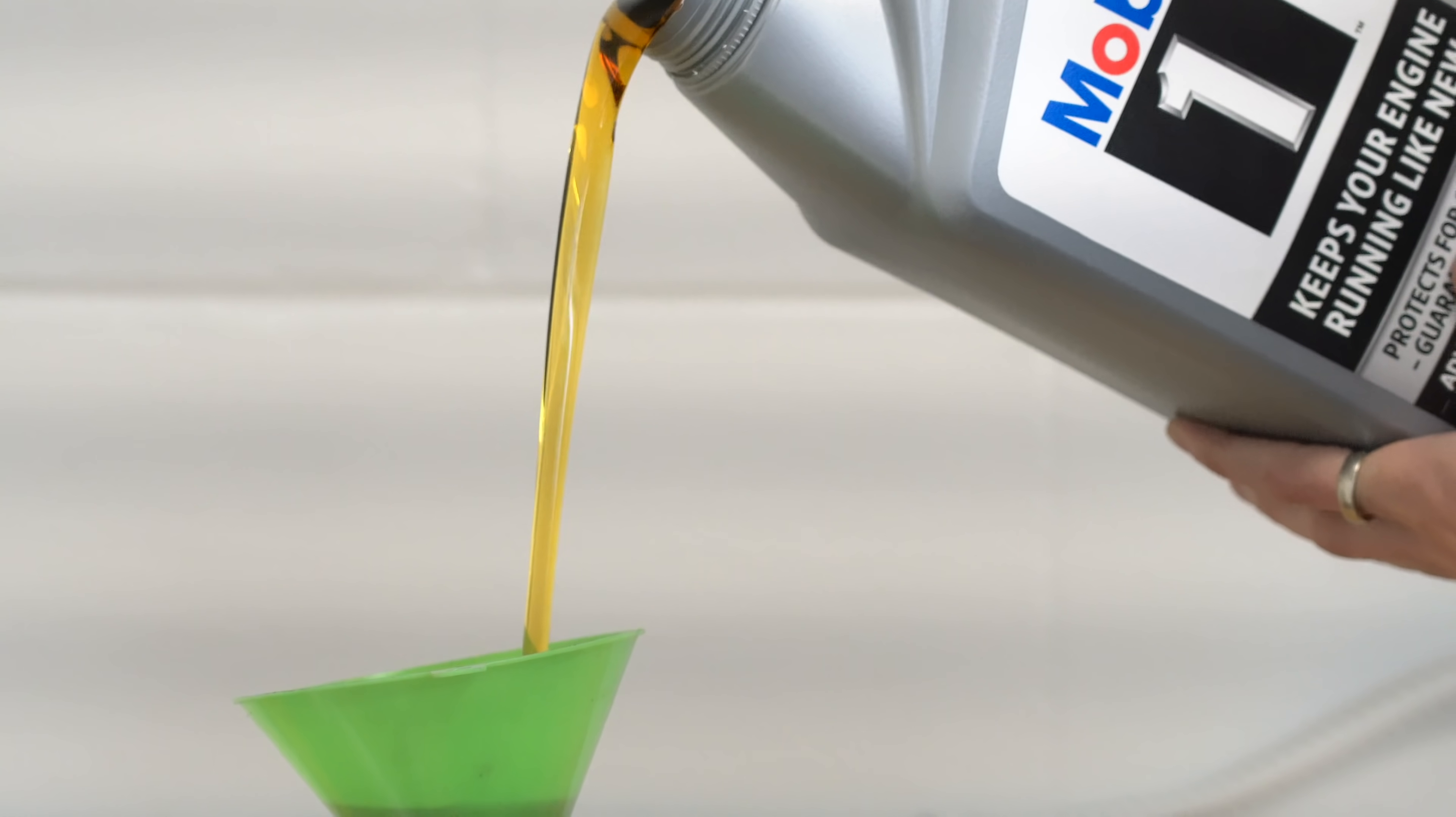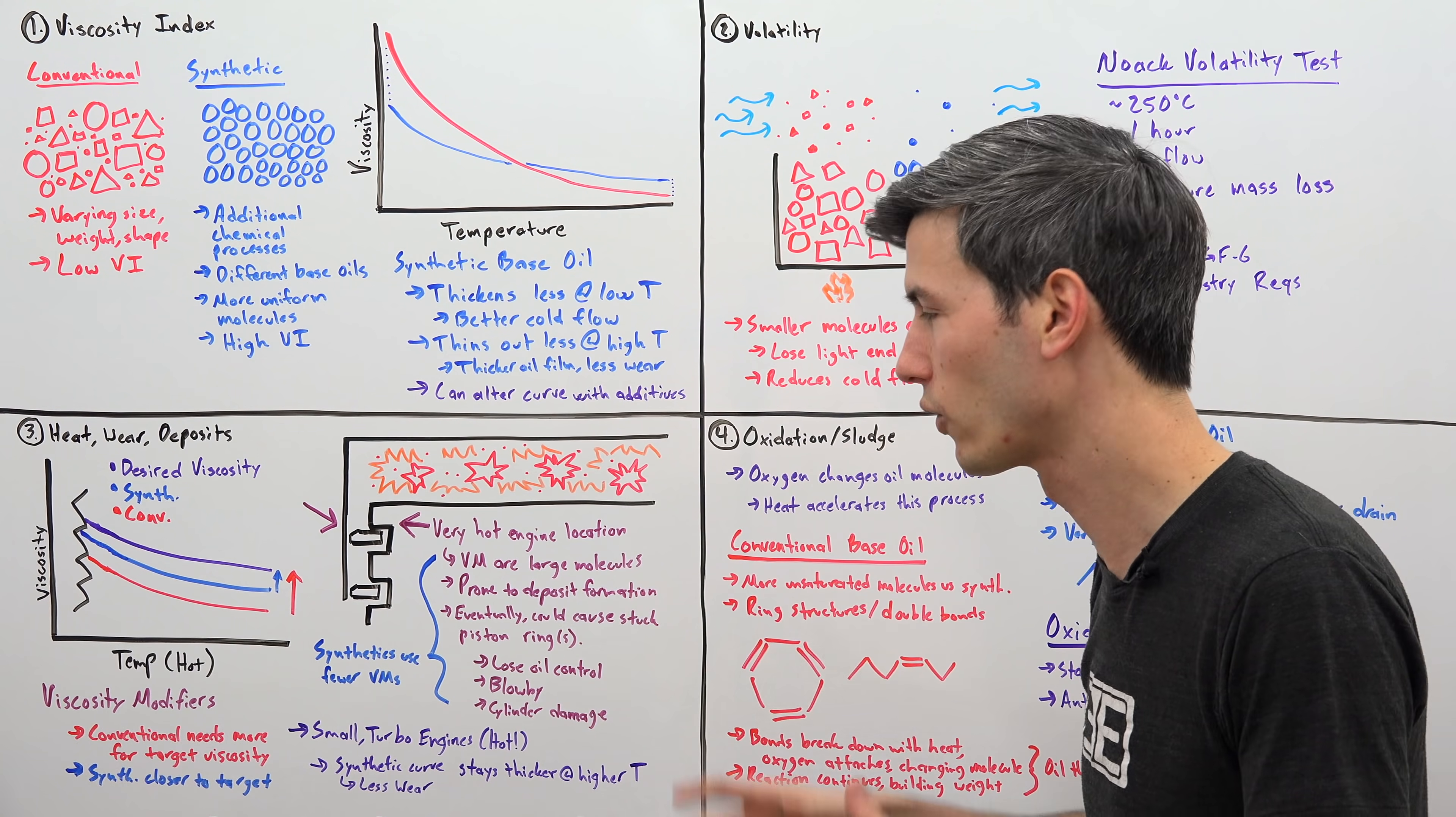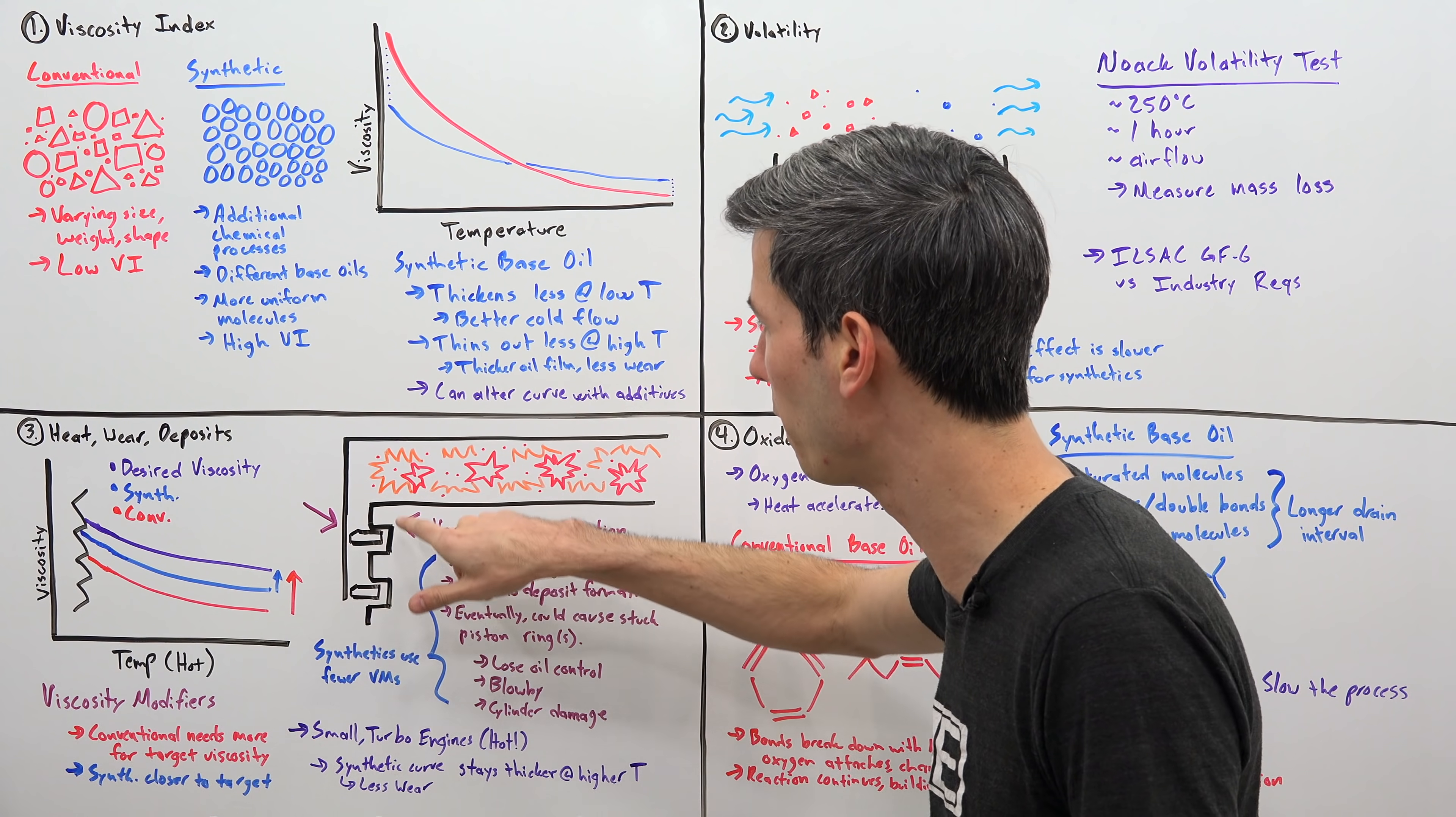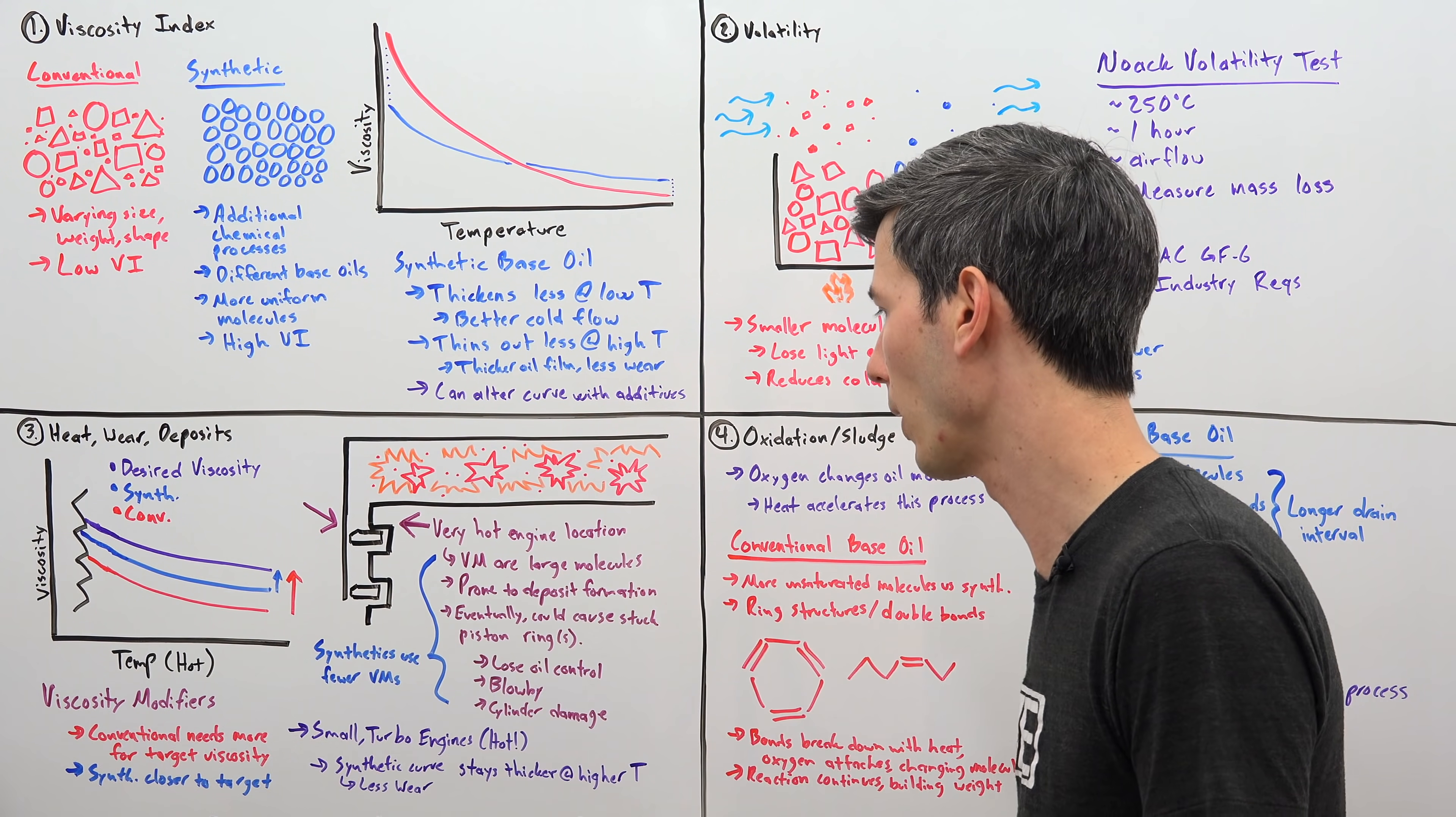In fact, they can be about 200 to 2,000 times the size of the molecules that are making up your base oil. So these very large molecules, they're susceptible to creating deposits. An area where that can happen is the top of your piston. Your top piston ring, this is going to be a very hot area. So you can have these viscosity modifiers, which are these very large molecules, they can start to form deposits around your piston rings.